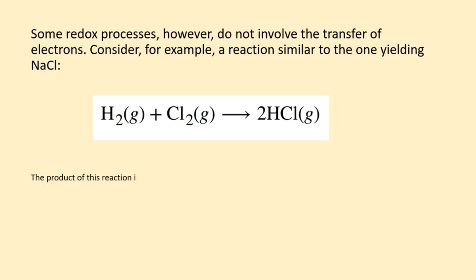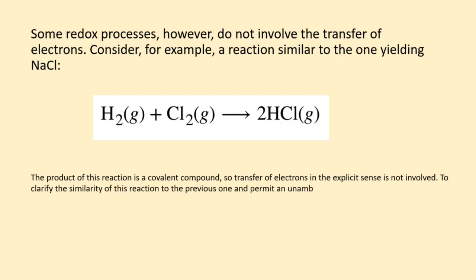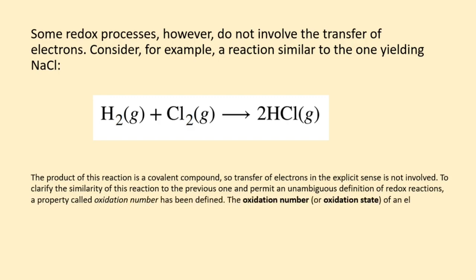The product of this reaction is a covalent compound, so transfer of electrons in the explicit sense is not involved. To clarify the similarity of this reaction to the previous one and permit an unambiguous definition of redox reactions, a property called oxidation number has been defined.